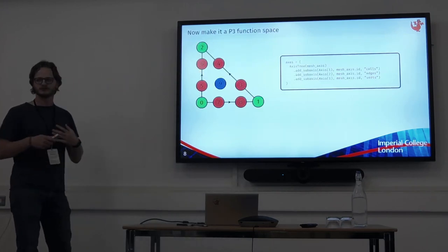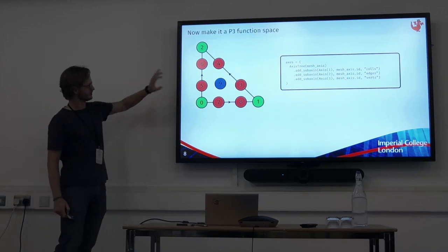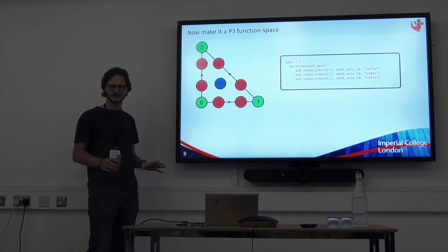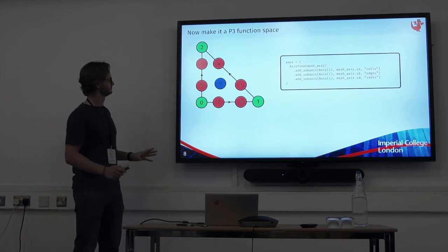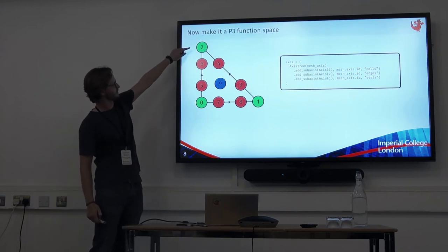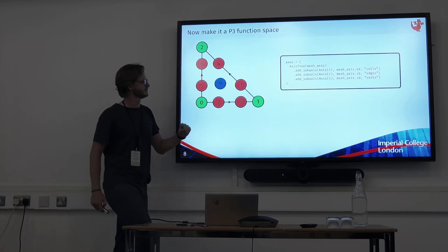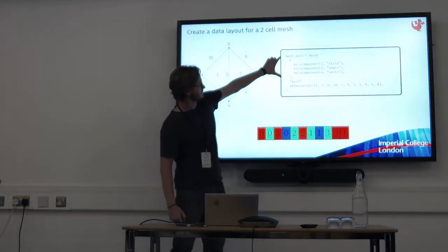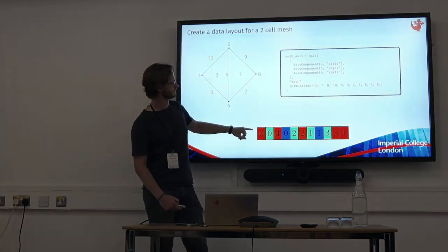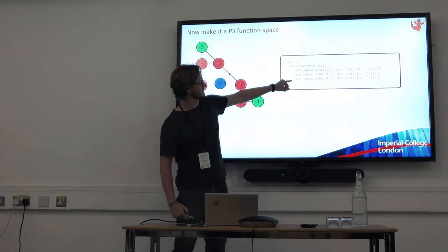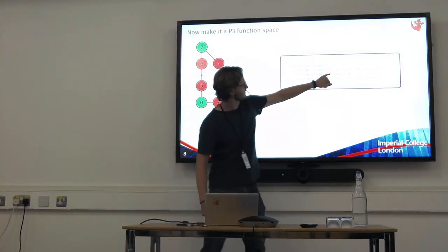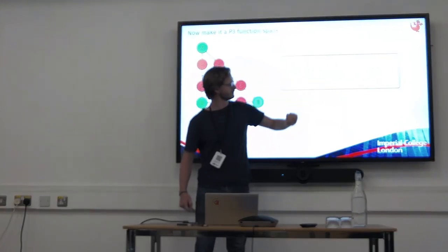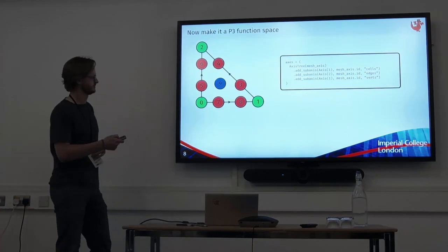Now let's make it into a P3 function space. Here is the DOF layout for P3. I'm not touching on orientations — that is the thing I need to get working. Vertices have one degree of freedom, edges have two, and cells have one. So I take my mesh axis from before, which looks like this, and I add three sub-axes: my cells have one degree of freedom, edges have two, vertices have one.